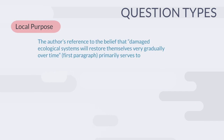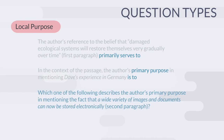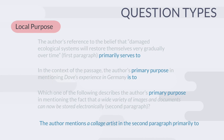Local purpose is asking us about the reason an author included a certain detail — why did she talk about damaged ecological systems or Dove's experience in Germany? These question stems will have a specific detail and then a phrase that sounds like it was in order to do what.